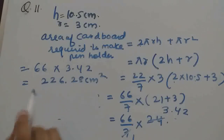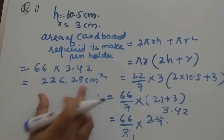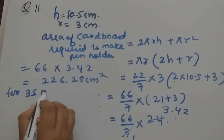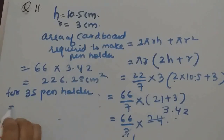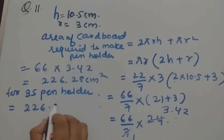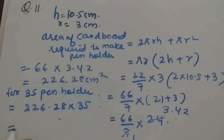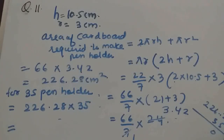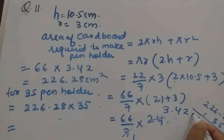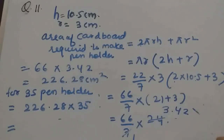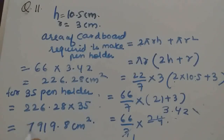This is the area of 1 pen holder. For 35 pen holders we multiply: 226.28 into 35 = 7919.8 cm square.